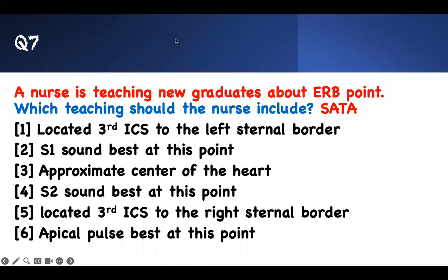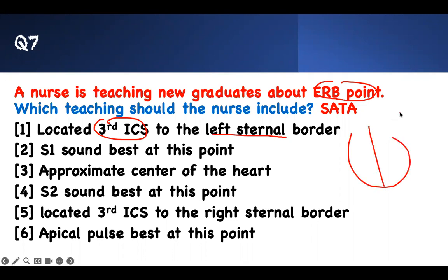Number seven: A nurse is teaching about Erb's point. Where is it located? Third intercostal space on the left side of the sternal border. Remember — patient left is on your right when you face them. The Erb's point is right here at the third intercostal space, left sternal border. You can hear S1 best there, and it represents the center of the heart.